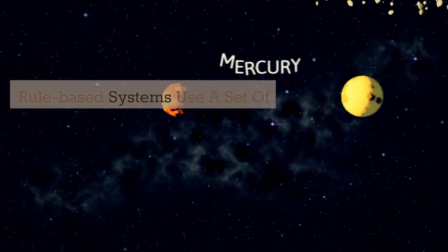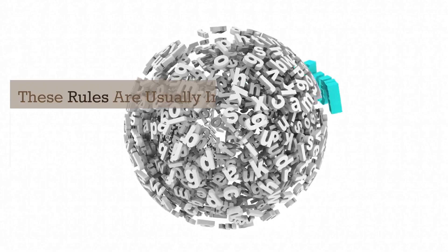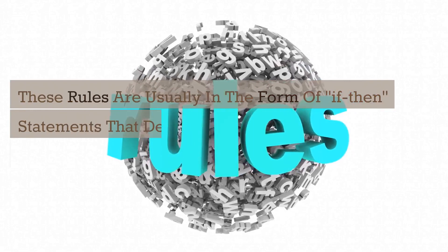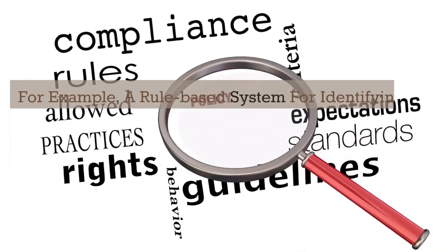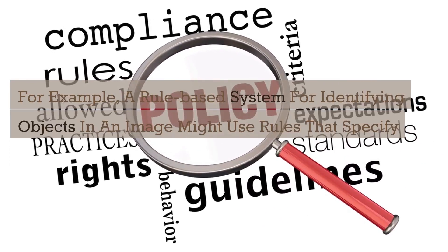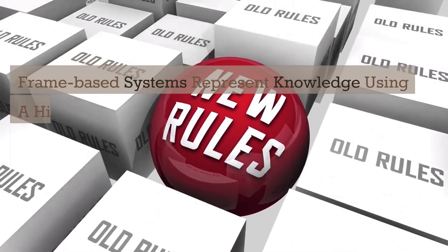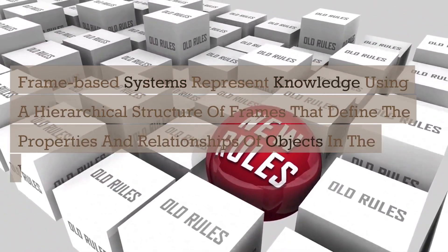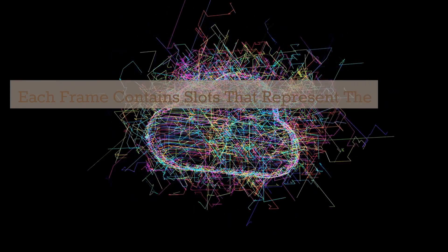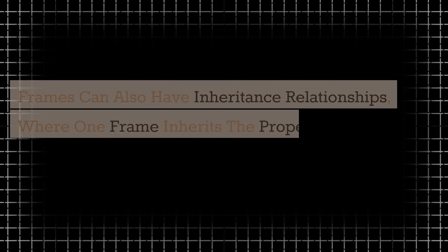Rule-based systems use a set of rules that describe the relationships between objects in the world. These rules are usually in the form of if-then statements that define the conditions under which a particular action should be taken. For example, a rule-based system for identifying objects in an image might use rules that specify the shape and color of the object. Frame-based systems represent knowledge using a hierarchical structure of frames that define the properties and relationships of objects. Each frame contains slots representing attributes such as size, color, and shape, and frames can also have inheritance relationships.